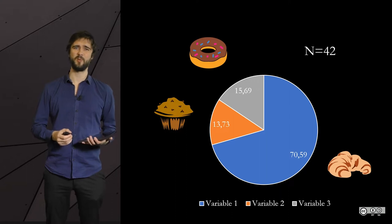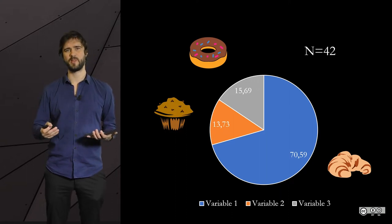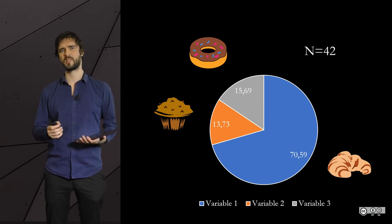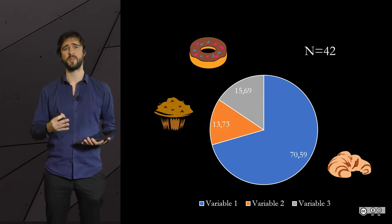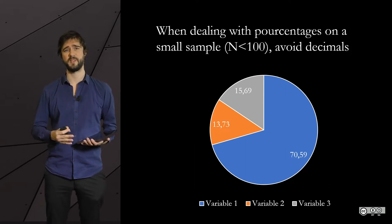It is not technically wrong, but it makes no sense when the sample size is too small, typically below 100. Writing down the decimals makes only sense when you have important sample size: hundreds, thousands, tens of thousands of answers, for instance.